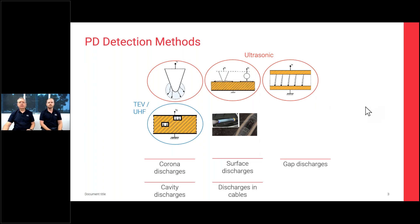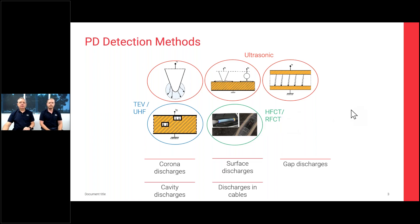Internal cavity discharges are not detected ultrasonically — they're only detected using electromagnetic techniques, primarily the Transient Earth Voltage (TEV) technique or a UHF-type technique. When looking for discharges down cables, we typically deploy a Radio Frequency Current Transformer (RFCT) or High Frequency Current Transformer (HFCT), clamped on the cable earth at the switchgear or at a cable joint.